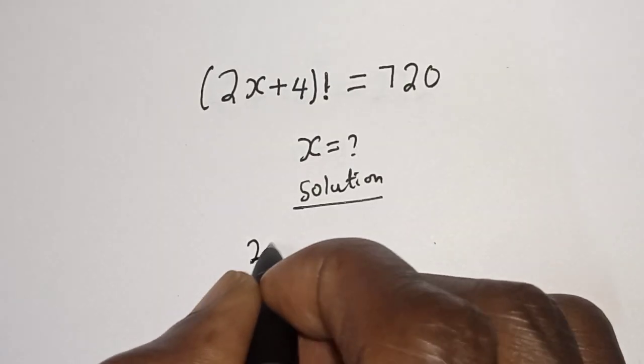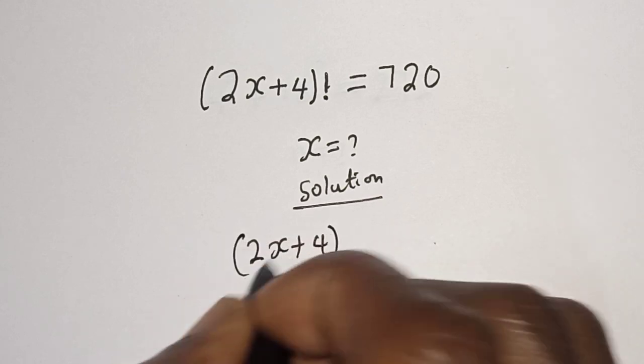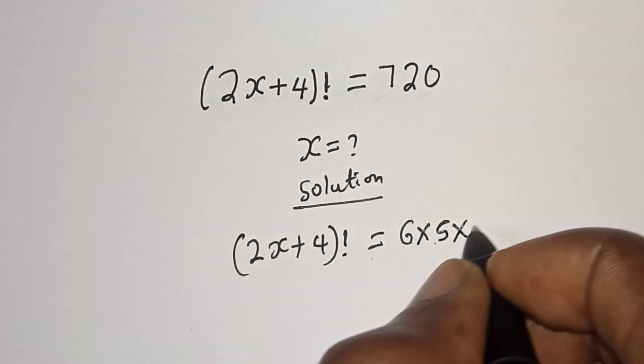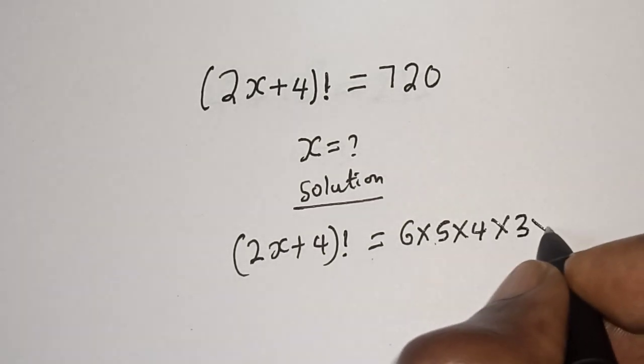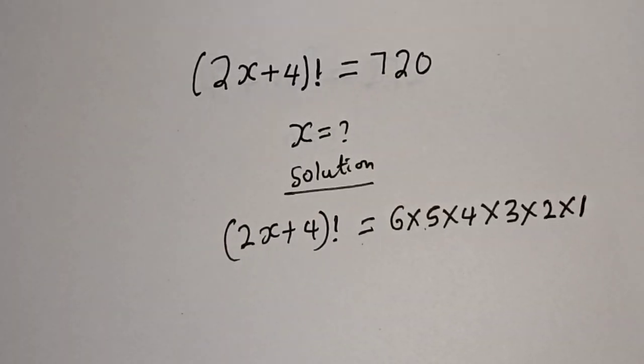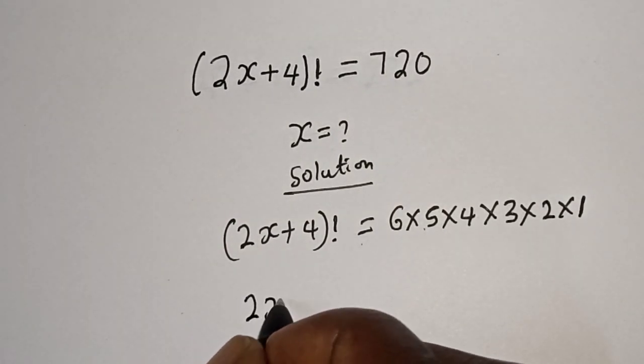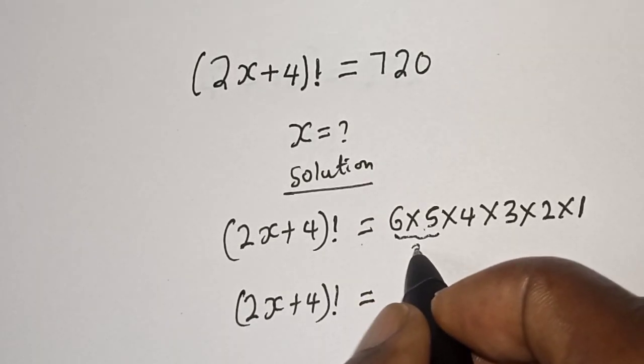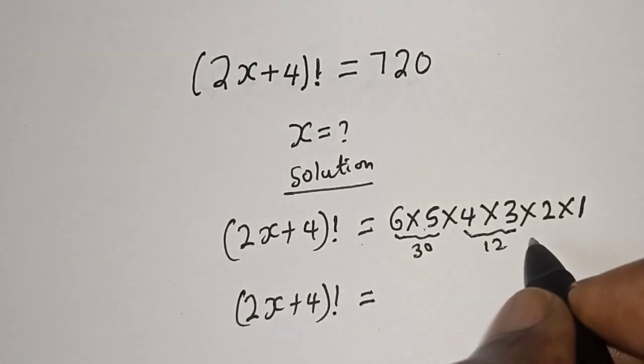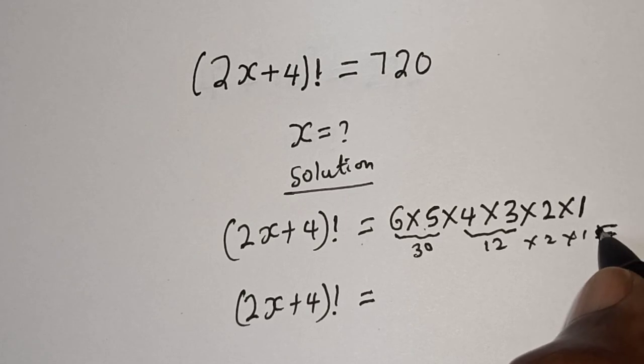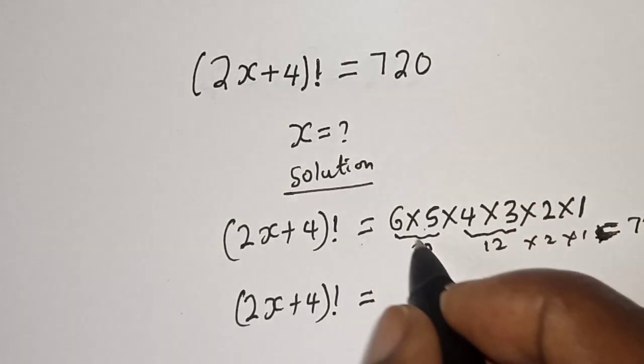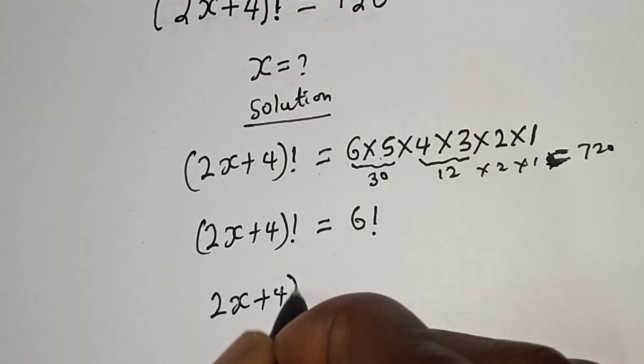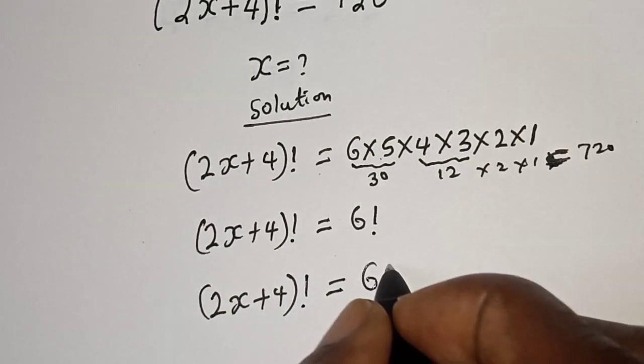Solution: We have 2x plus 4 factorial is equal to 720, which can be written as 6 times 5 times 4 times 3 times 2 times 1. Then we have 2x plus 4 factorial is equal to, let's work with these two: this is 6 times 5, we have 30, and this is 4 times 3, which is 12, multiplied by 2 times 1. This is equal to 720.